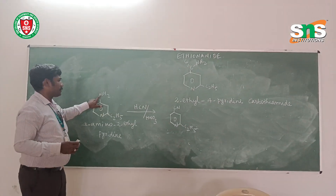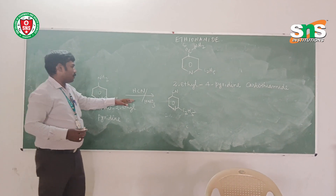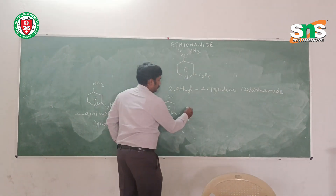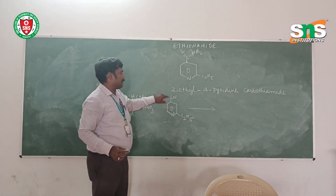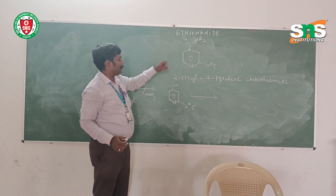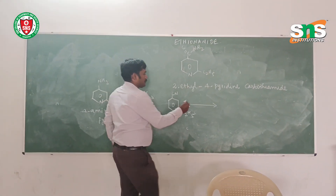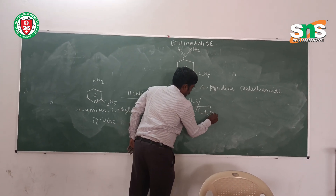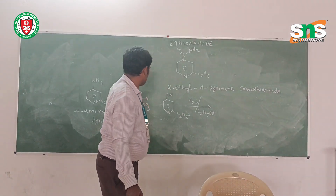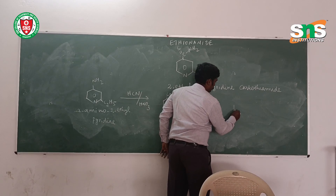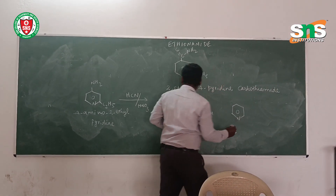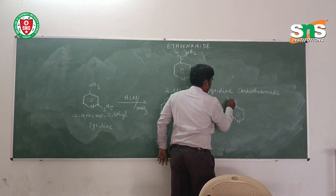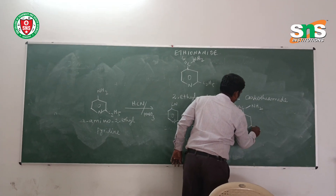In this reaction, hydrogen is added to the amino group, which is then eliminated as ammonia. This gives the cyano derivative — that is, the 4-cyano-2-ethylpyridine. In the next step, we need to add a sulphur group. This is done by treating with hydrogen sulphide (H2S) in the presence of alcohol. The sulphur is added to the carbon, converting it to C=S, and hydrogen is added to the nitrogen, converting it to NH2.